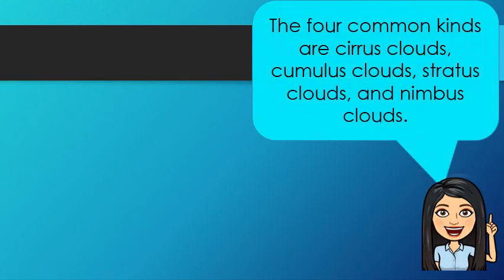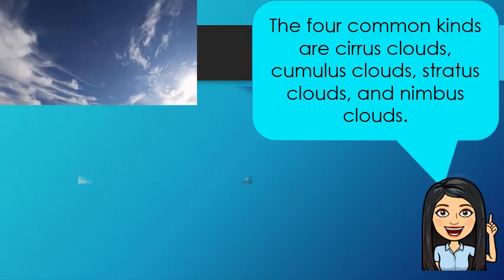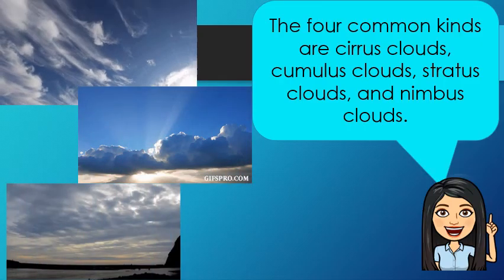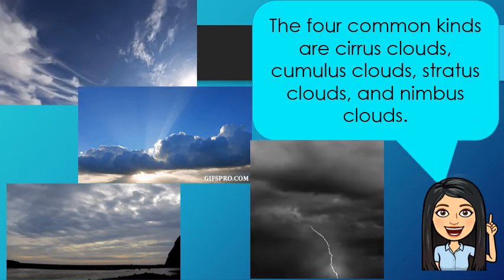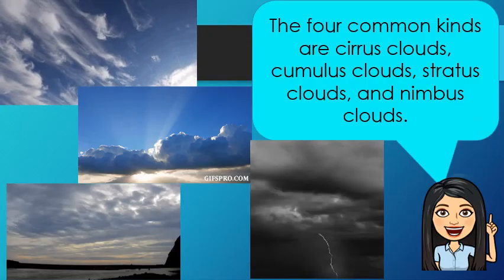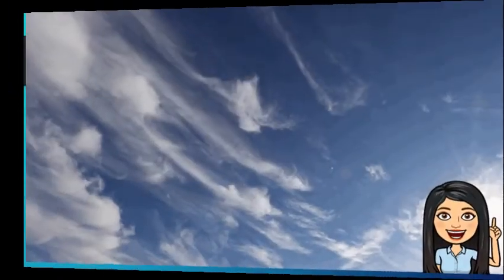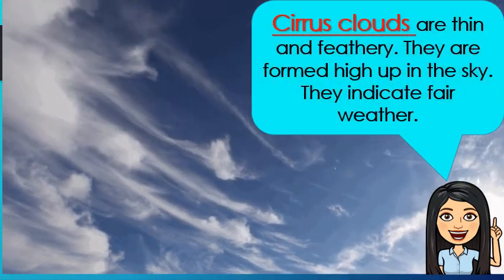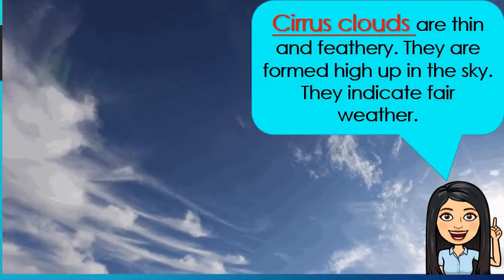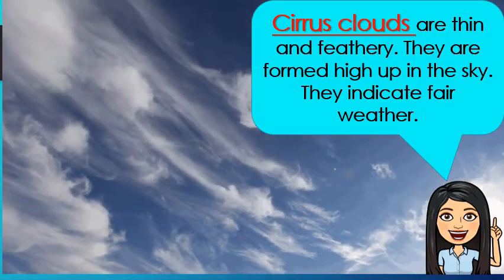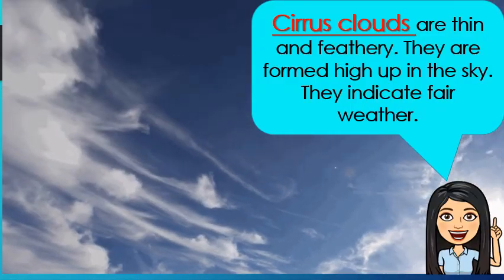The four common kinds of clouds are cirrus clouds, cumulus clouds, stratus clouds, and nimbus clouds. Let's tackle them one by one. These are cirrus clouds. They are thin and feathery. They are formed high up in the sky. They indicate fair weather.